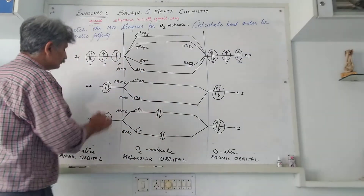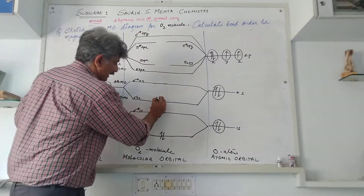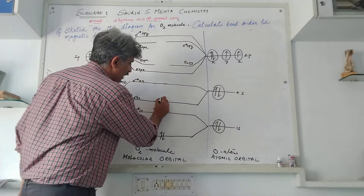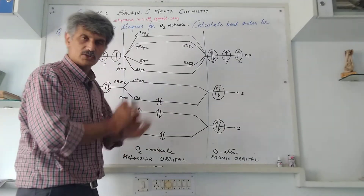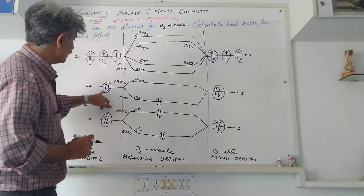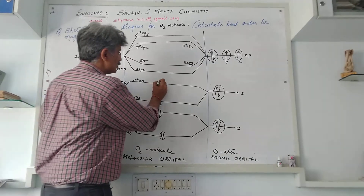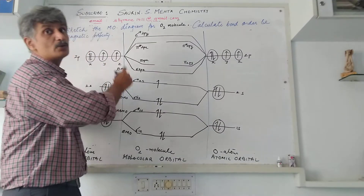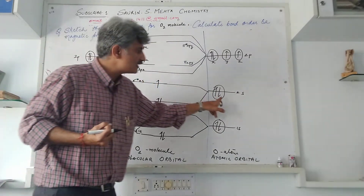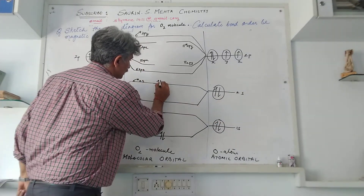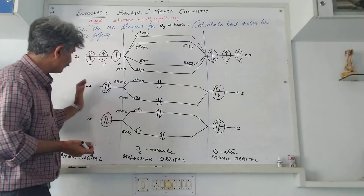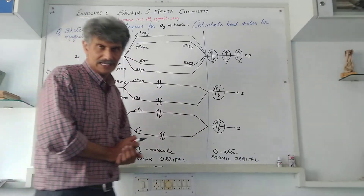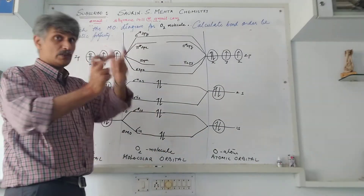One electron from 2s gets into the sigma 2s BMO and one electron from the other oxygen's 2s also gets paired up in the same sigma 2s orbital — so pairing takes place. The remaining electron in the 2s orbital of the other oxygen atom compulsorily gets into sigma star 2s, the anti-bonding molecular orbital, and pairs up there. For 2s and 1s there is no complication, as we already covered these details for the nitrogen molecule in the previous lecture. But now comes the important part — the twist.